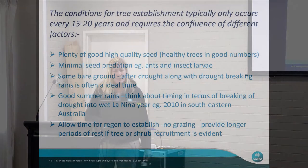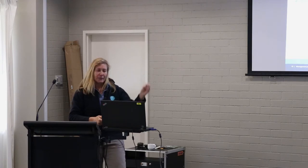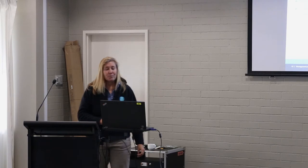Avoid drifts from fertilisers and herbicides. The really widespread conditions for tree establishment actually only happen every 15 or 20 years because it needs so many things to happen together — getting good quality seed, lots of seed, but as Meredith said, as soon as there's seed there are ants and insects. So you've got to get around all of that — hopefully the sheer quantity of seed will overtake the ants and insect larvae.